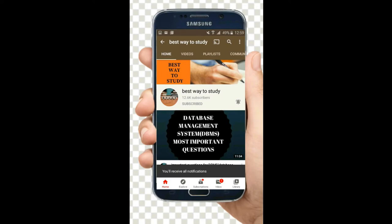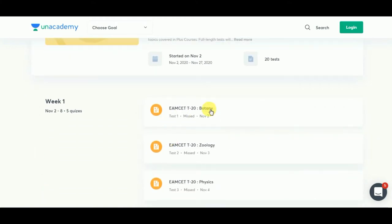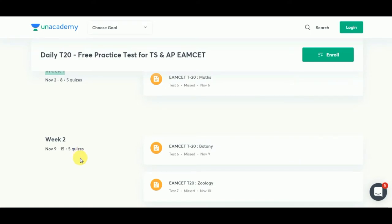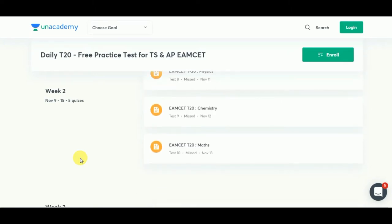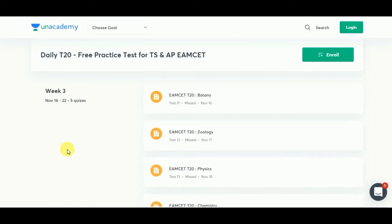Subscribe and hit the bell icon for more notifications. An academy is providing daily T20 free practice tests for both TS and APM SET. It started on November 2nd. Week one contains biology, zoology, physics, chemistry, and mathematics with five quizzes. Week two will have five quizzes on zoology, physics, chemistry, and mathematics. Week four quiz started on November 23rd and ends on November 29th with four quizzes on botany, zoology, physics, and chemistry. Don't forget to enroll and take these free practice tests to analyze your performance and work on improvement. Upcoming sessions links are in the description below.